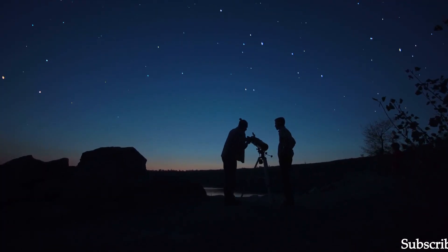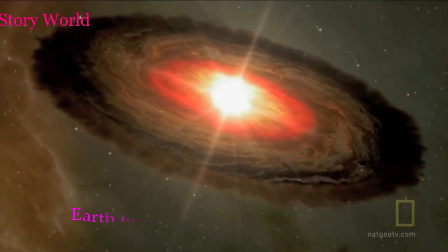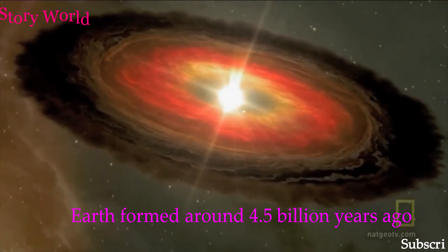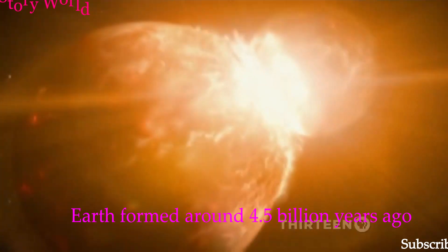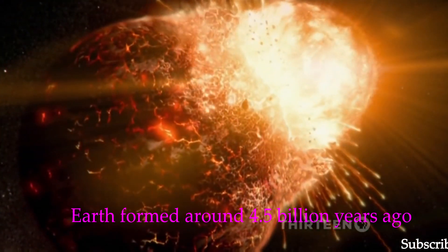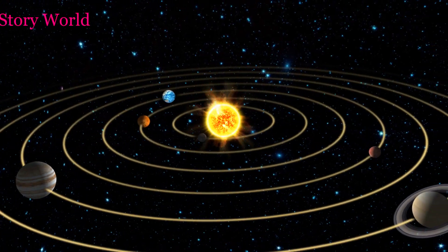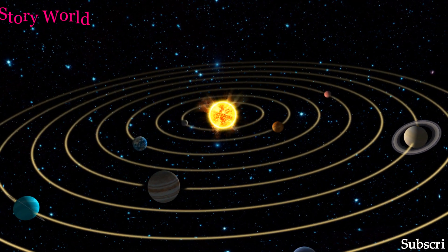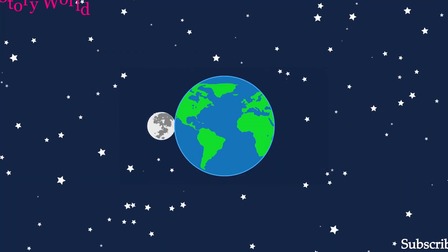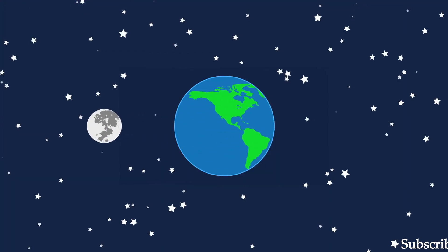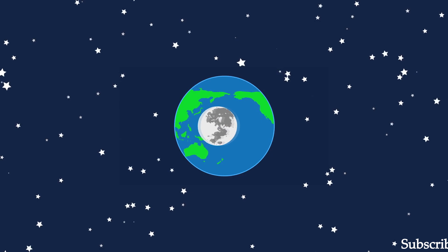Scientists believe that Earth was formed about 4.5 billion years ago, nearly at the same time when the rest of the solar system was formed. The Moon is the only natural and permanent satellite of the planet Earth.